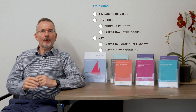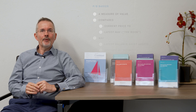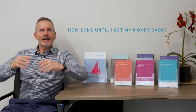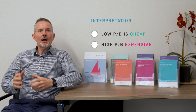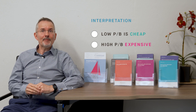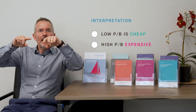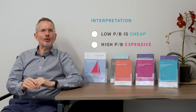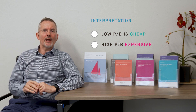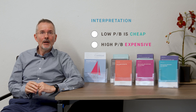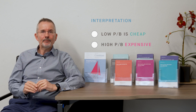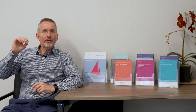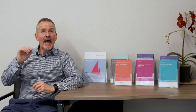It asks a similar question to the price-earnings ratio: how long will it take on an asset basis to get my money back? Low is cheap and high is expensive. For example, if you've got a price of £1 and a book value per share of 10p, then the price-to-book ratio is 10. The question then becomes how do you know whether that's cheap or expensive? With all ratios, the answer is benchmarking and a bit of judgement.